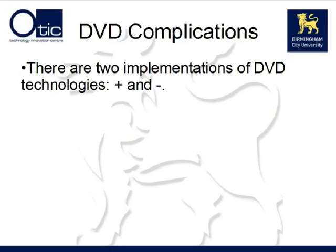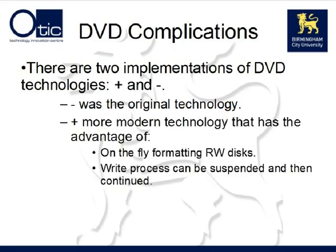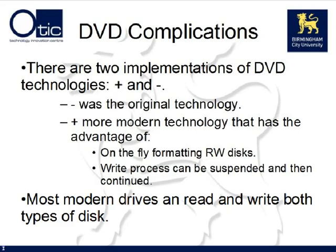However, there is a complication with DVD technologies. There are two implementations of the DVD standard available: plus and minus. DVD minus was the original writable DVD technology, later joined by the plus standard. The plus standard has a number of advantages — it allows for on-the-fly formatting of RW disks, meaning you do not need to format the disk before writing data to it. Additionally, the write process can be suspended and then continued, whereas with the minus technology this would have led to a corrupt disk. Luckily, most modern drives can read and write both types of disk, though if you are looking at an older computer you may need to bear this in mind when purchasing media.